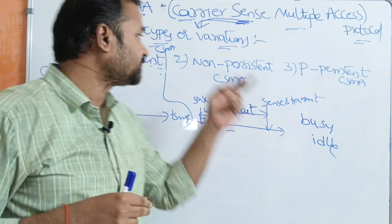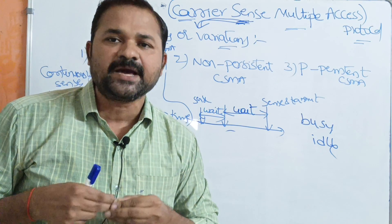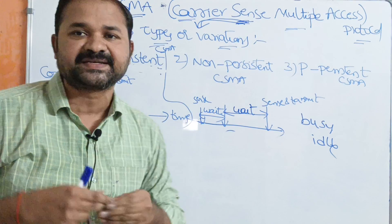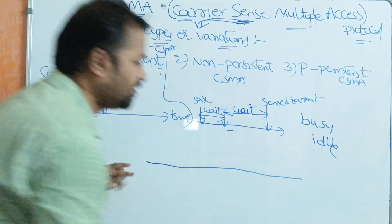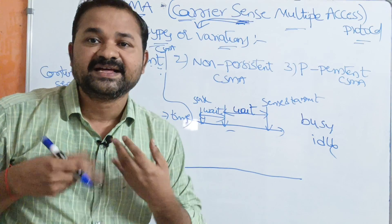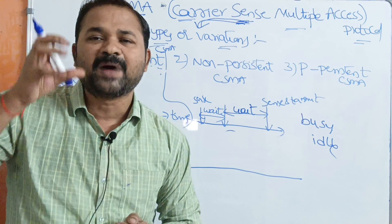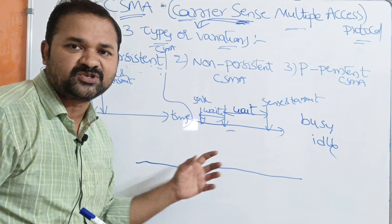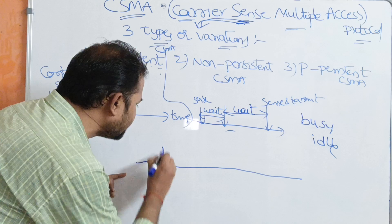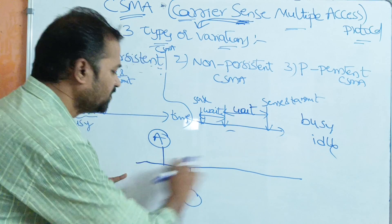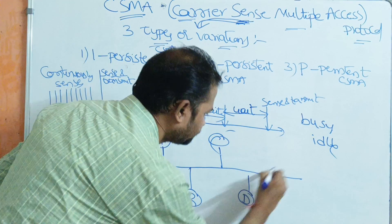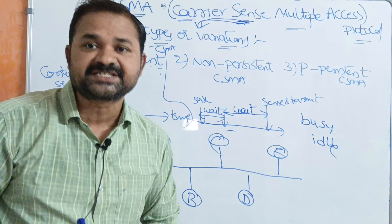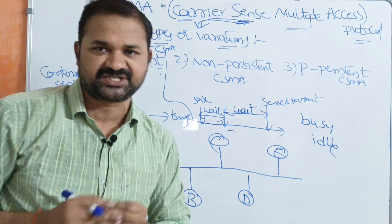Let us discuss CSMA protocol. CSMA stands for Carrier Sense Multiple Access — 'carrier' means transmission medium or communication channel, 'sensing' means listening, and 'multiple access' means multiple users can access the transmission medium. Consider a shared medium — a communication channel — with five devices connected to it. These five are called devices, stations, nodes, or users.